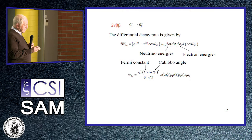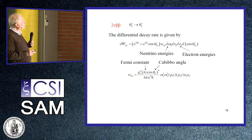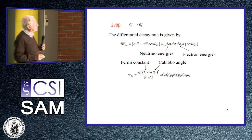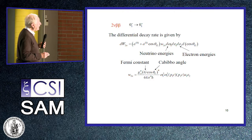Once we have solved those equations, we are in a position to calculate the differential decay rate. This form involves the neutrino energies omega, the electron energies epsilon-one and epsilon-two, and the angle between the two electrons.